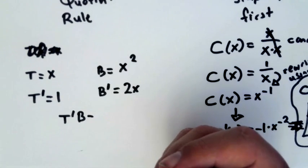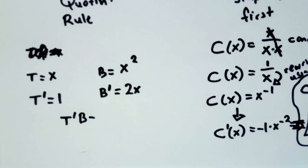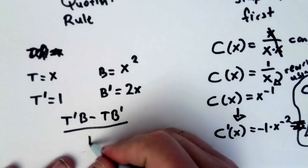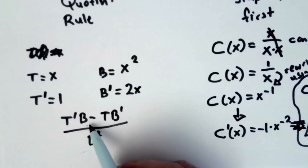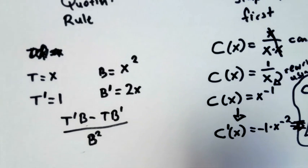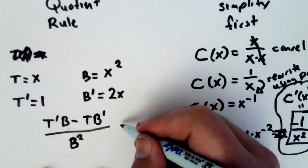So then it's T prime B. Have you ever seen the children show Chicka Chicka Boom Boom? So the song starts A told B and B told C. You can adapt that here. You can say T prime B minus B prime T all over B squared. Whatever works for you.